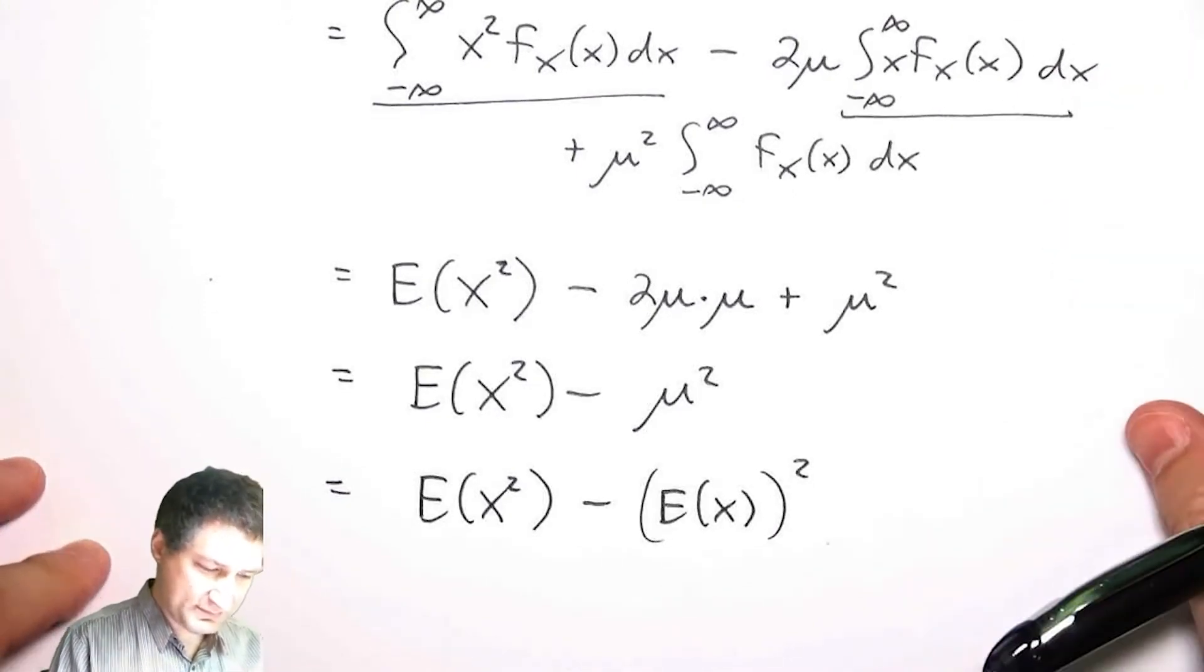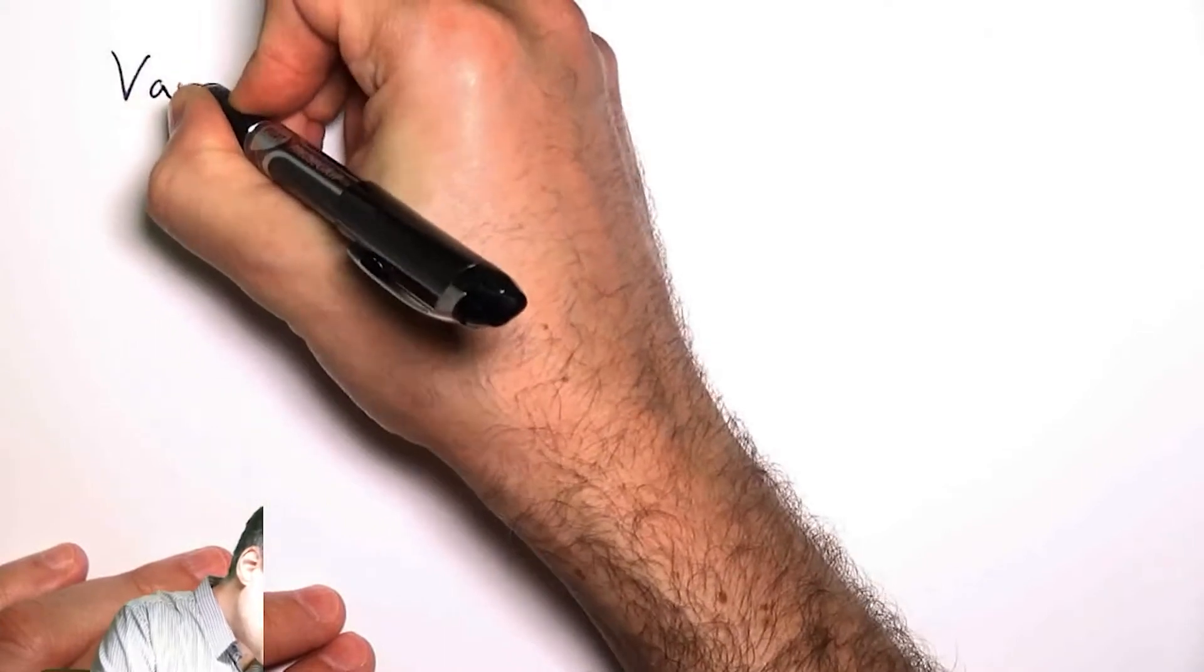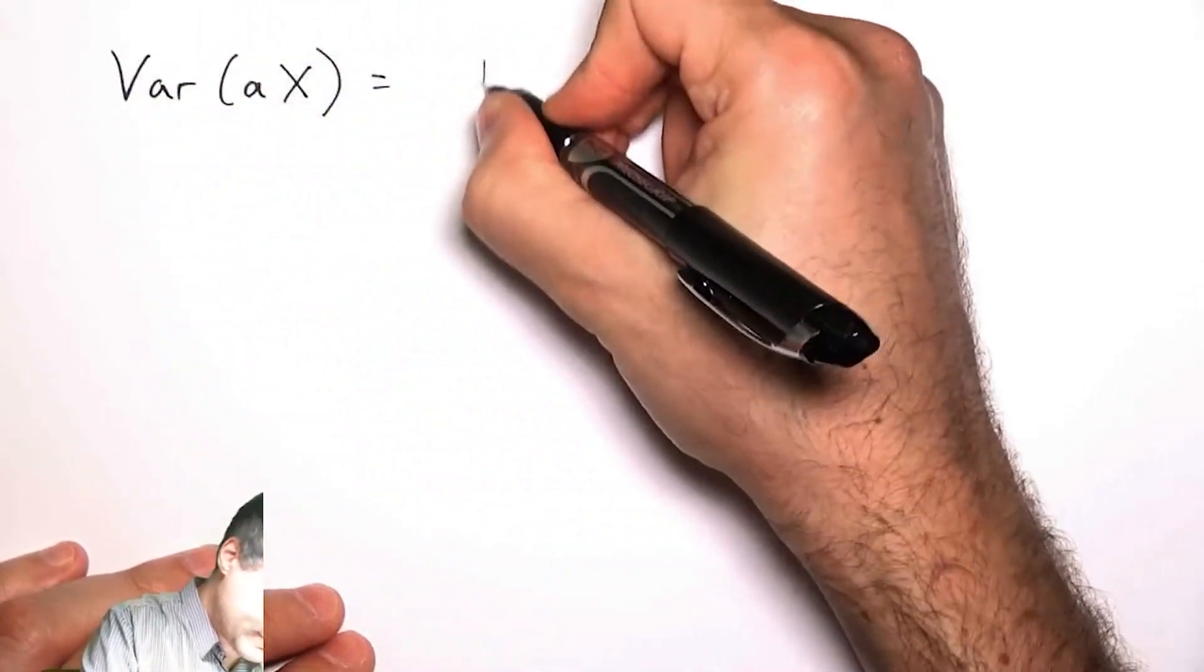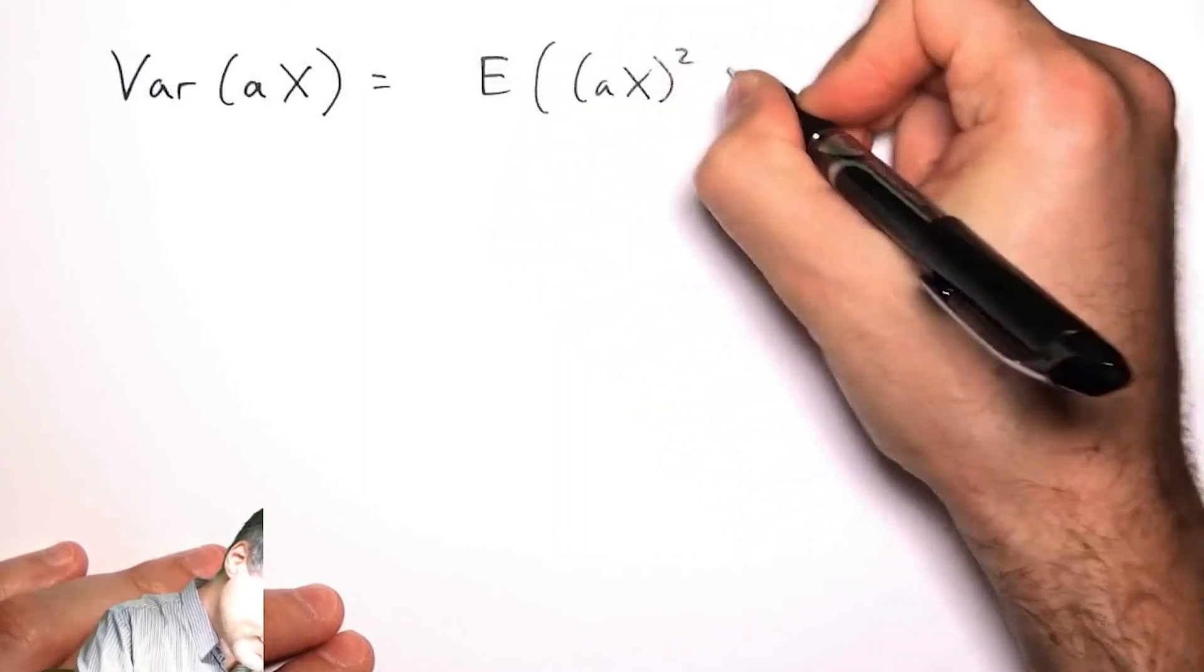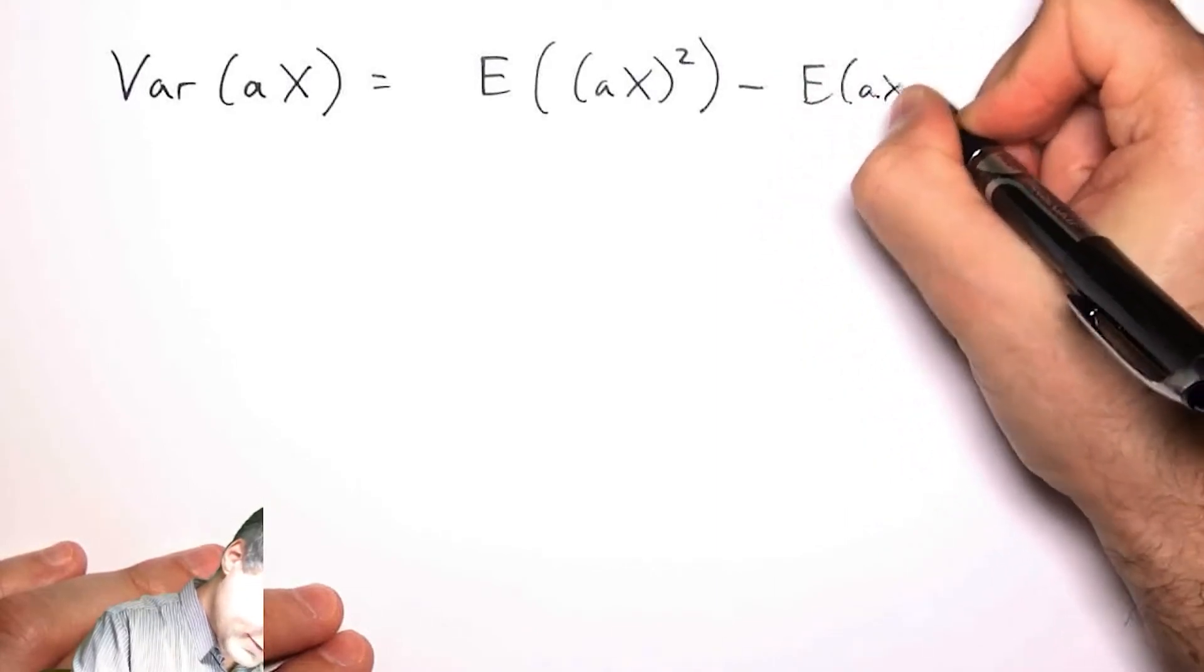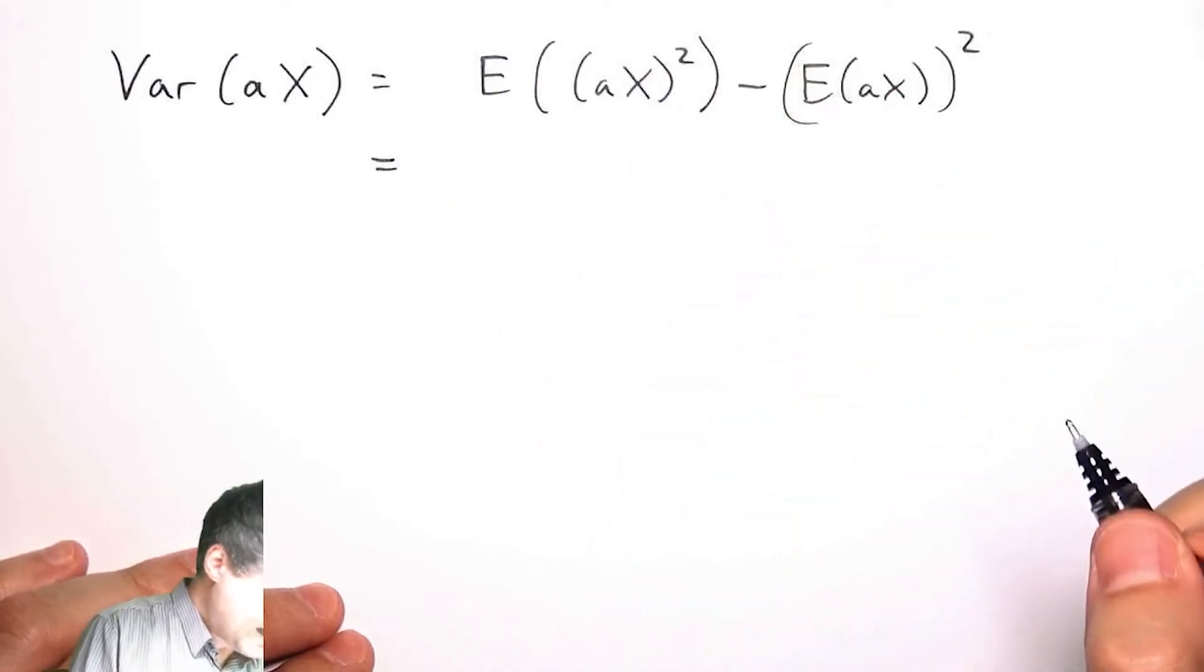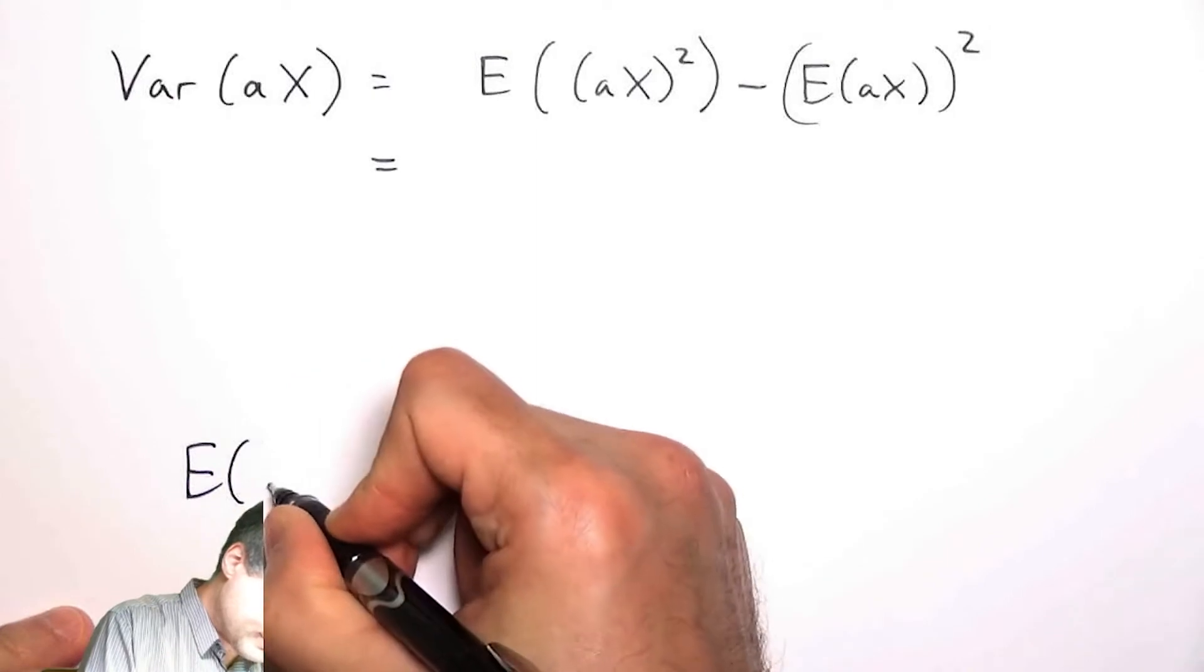Just some comments about variance. One thing to note is what is the variance of a random variable times a constant? Well, I can work it out—it's the expected value of aX minus the expected value of aX, all squared. I already know that the expected value of two random variables added together...